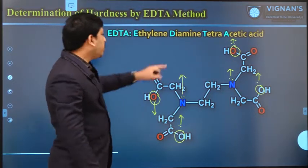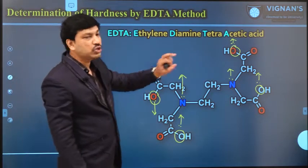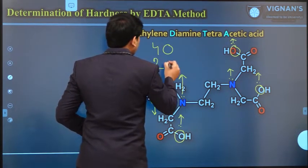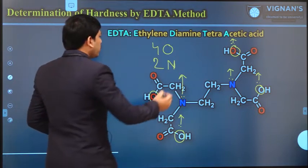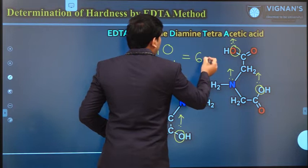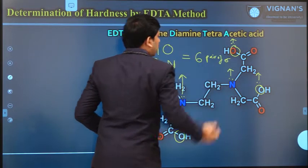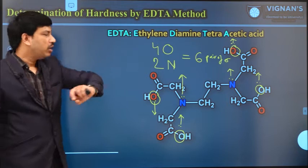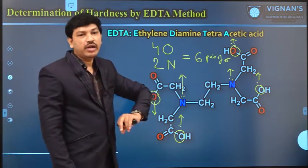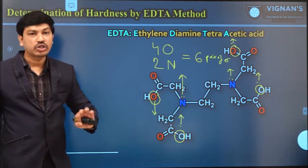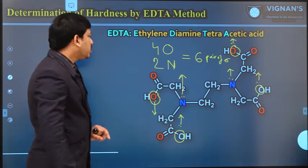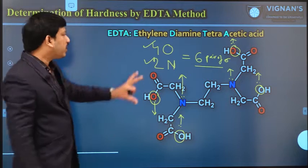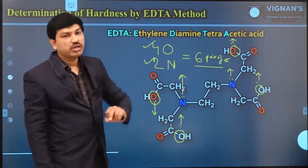So if you see the EDTA molecule, it actually has six donor centers. Among those six, four belong to oxygen donors and two belong to nitrogen donors. So totally the EDTA molecule is able to donate six pairs of electrons — that means a single molecule can act as a hexadentate ligand. So EDTA acts as one of the very good strong complexing agents or chelating agents, donating pairs of electrons via four oxygen centers and two nitrogen centers. That is the reason hardness can be easily measured by using the EDTA method.